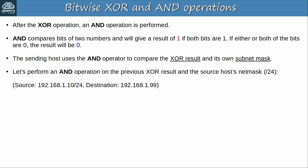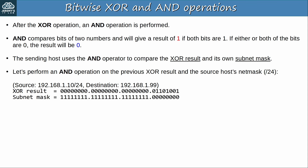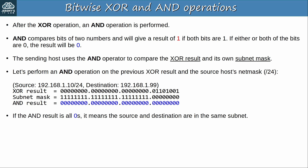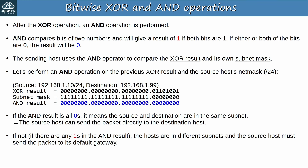As a reminder, the source IP is 192.168.1.10 with prefix length /24, and the destination IP is 192.168.1.99. We AND the XOR result and the subnet mask — the result is all 0s. If the AND result is all 0s, it means the source and destination are in the same subnet, so the source host can send the packet directly to the destination host, encapsulated in a frame destined for the destination host's MAC address. However, if the result is not all 0s, it means the hosts are in different subnets, and the source host must send the packet to its default gateway for routing to the destination.